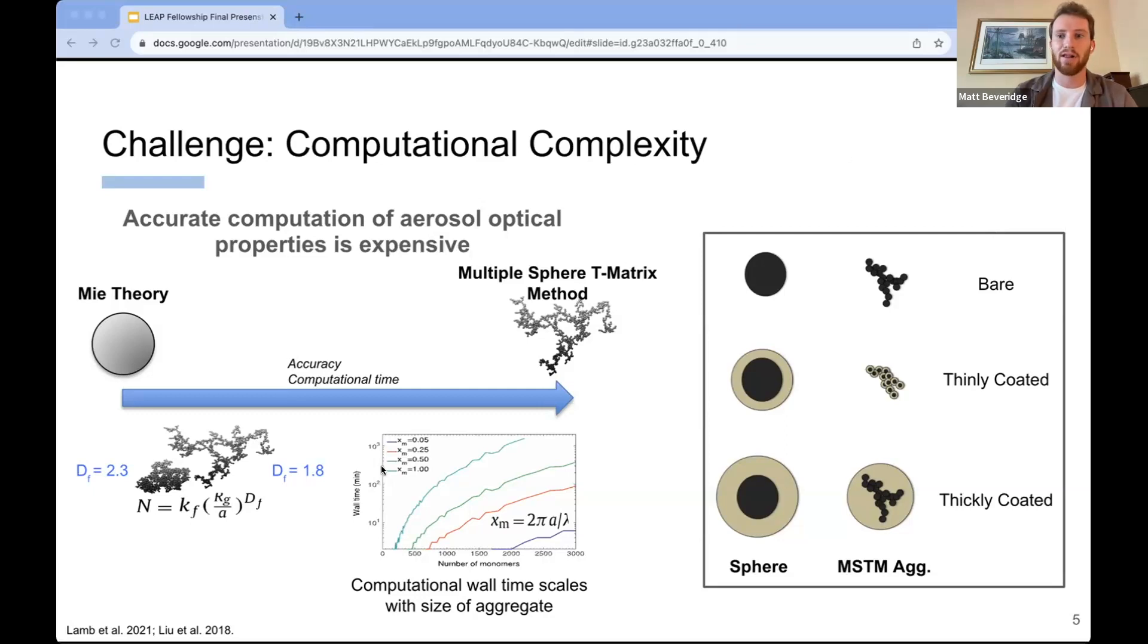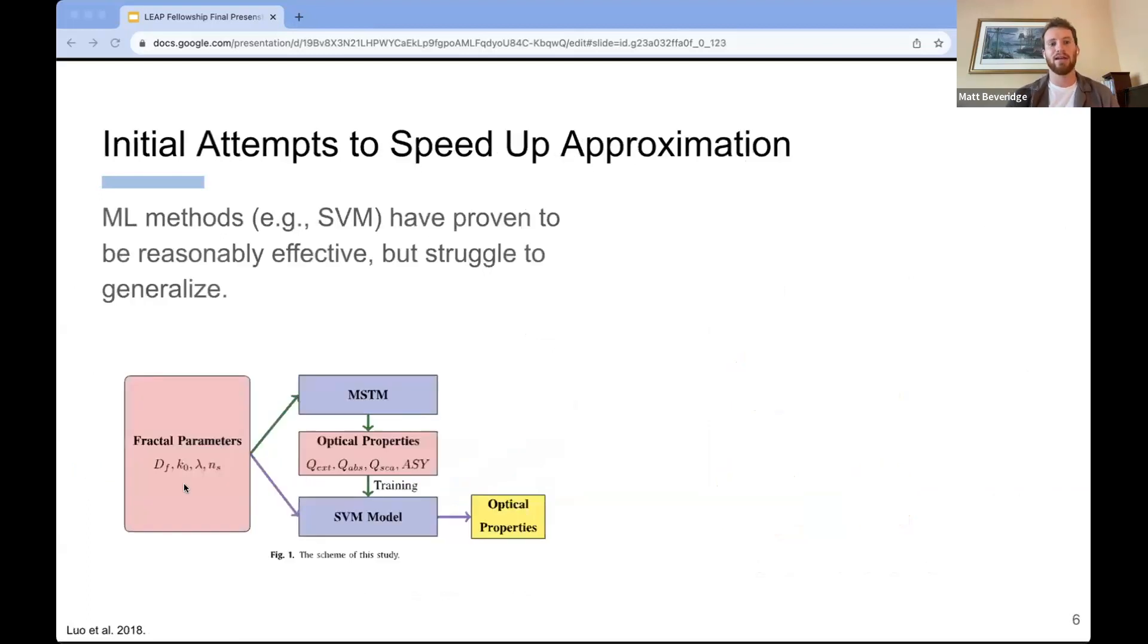Nonetheless, even the modeling of bare aggregates for larger aggregates is computationally expensive. So some methods have been undertaken to improve the computational efficiency of this, namely, as seen in other fields, using machine learning methods for production of these computationally expensive tasks, similar to what people do for, for example, computational fluid dynamics.